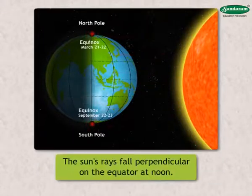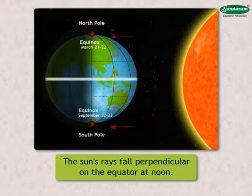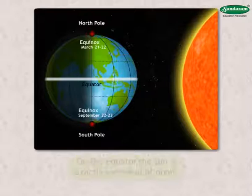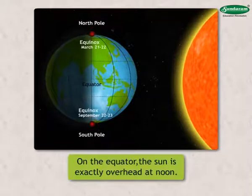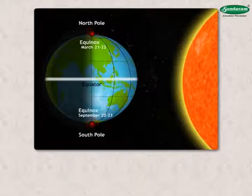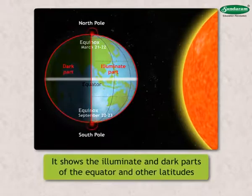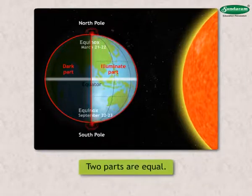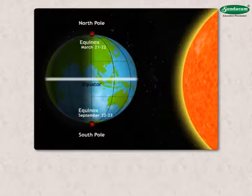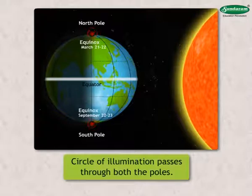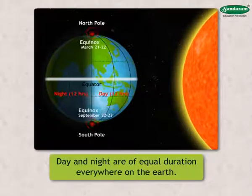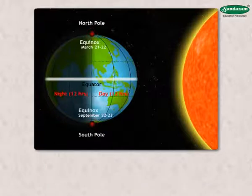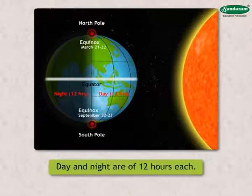On these days, the sun's rays fall perpendicular on the equator at noon. It means that on the equator, the sun is exactly overhead at noon. The circle of illumination divides the earth into illuminated and dark parts, and note that the two parts are equal. This is because the circle of illumination passes through both the poles on these two days. Hence, day and night are of equal duration everywhere on the earth, which means day and night are of 12 hours each.